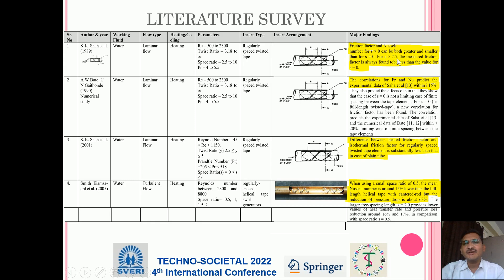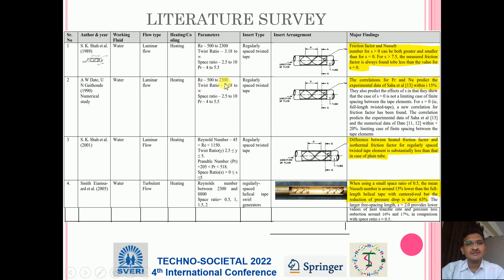For space ratio more than 7.5, the measured friction factor is always found to be less than that of the value at S=0. Another paper written by A.W. Dathe and U.N. Gaitonde in 1919 uses working fluid as water. Flow is laminar, used for heating application. The Reynolds number range is 500 to 2300 and regularly spaced twisted tip is used. The correlation of friction factor and Nusselt number predicted for the experimental data of Shah is within 15 percent.